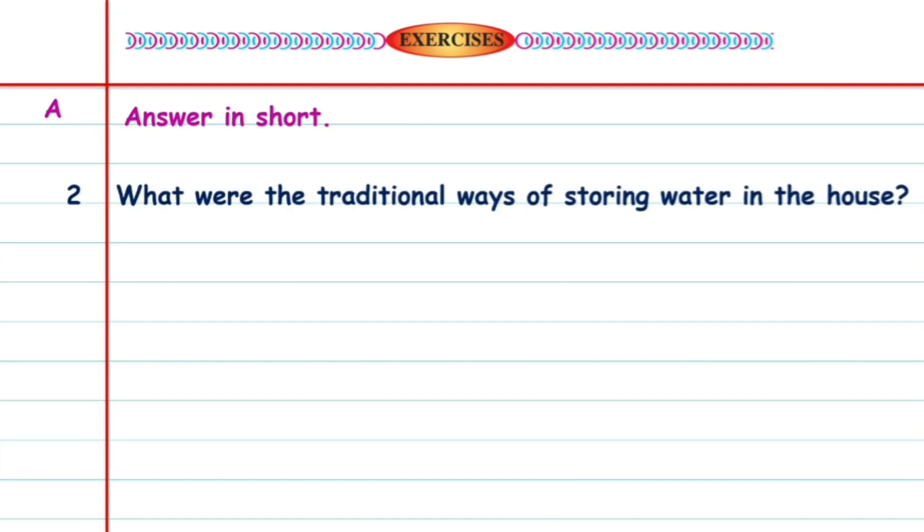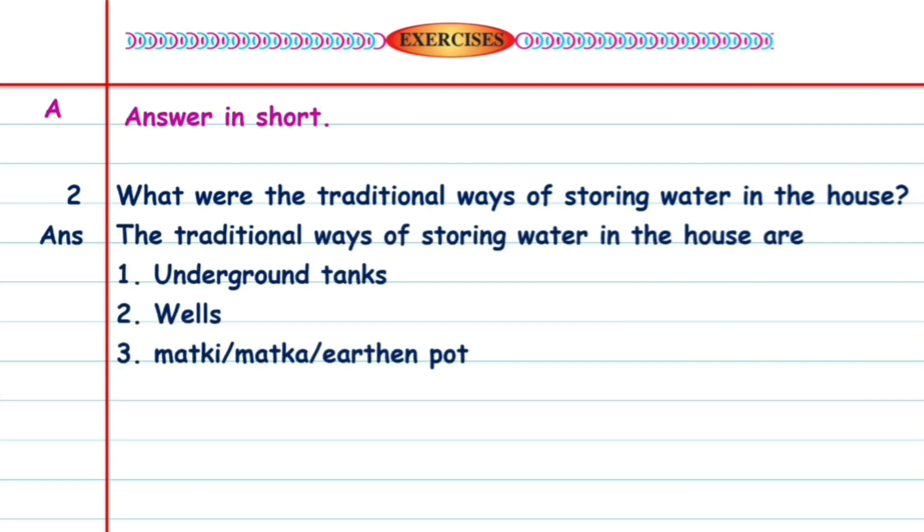Question 2: What were the traditional ways of storing water in the house? Answer: The traditional ways of storing water in the house are underground tanks, wells, matki or matka or earthen pot.